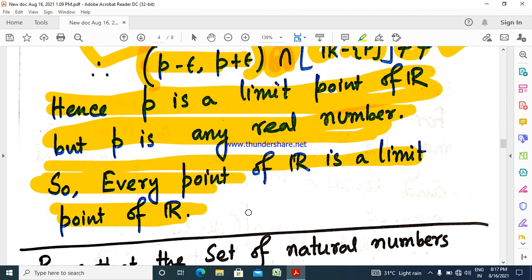Every point of R is a limit point. That is, R dash equals R. The derived set of R equals R.